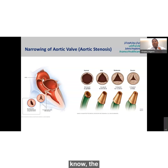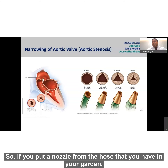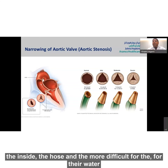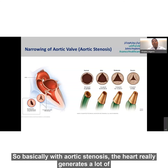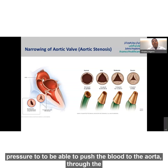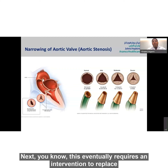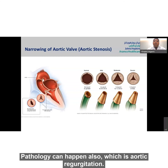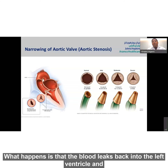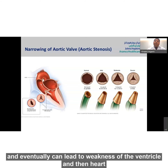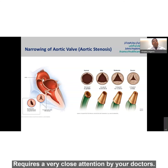This is similar to a garden hose: if you put a smaller nozzle on the hose, the more pressure inside and the more difficult for water to come out. With aortic stenosis, the heart generates a lot of pressure to push blood through the narrowed valve. Patients with severe aortic stenosis eventually require an intervention to replace the aortic valve. A similar pathology is aortic regurgitation, where instead of narrowing, blood leaks back into the left ventricle, leading over time to increasing size of the left ventricle and eventually weakness of the ventricle and heart failure. Both aortic stenosis and aortic regurgitation require close attention by your doctors.